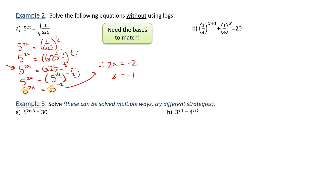You could check that by substituting negative 1 in: 5 to the power of 2 times negative 1 gives 5 to the power of negative 2. Is that the same as the square root of 1/625? Yes, because the square root of 1/625 is also 1/25 — the square root of 1 is 1, and the square root of 625 is 25. You could have jumped right to that simplified step at the beginning and found a common base more easily.